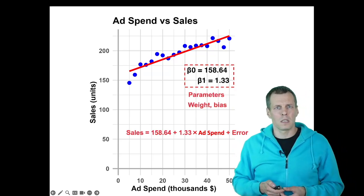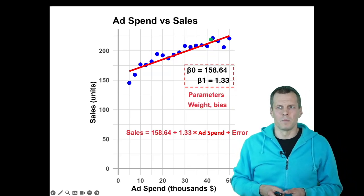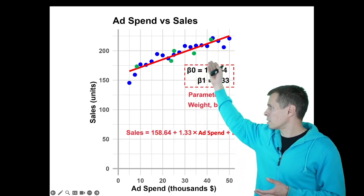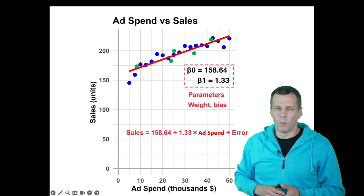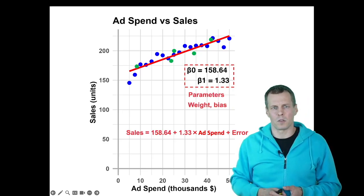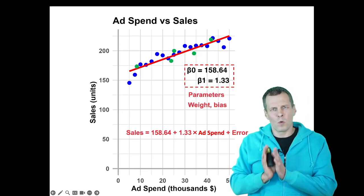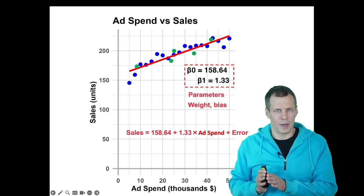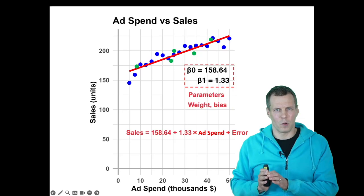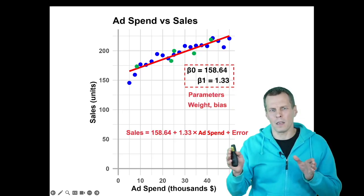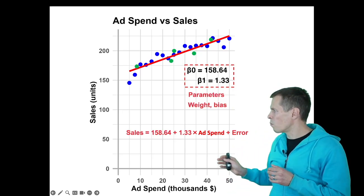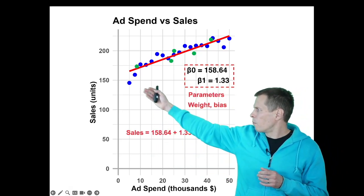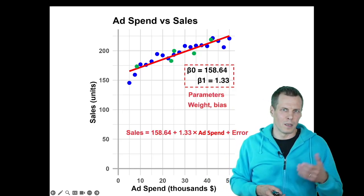We can use this line to simulate more data. If we know ad spending, then we can just plot more predicted sales values here. This works fairly well as long as you predict within samples. So if you predict something where you have data, our predictions work fairly well between zero and fifty thousand. We are predicting a bit more here than what we are observing.